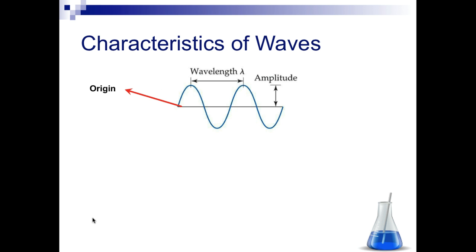So, characteristics of a wave. We have the origin in the middle, then we have the wavelength. The wavelength is the distance that it travels from crest to crest, or trough to trough, and the amplitude is the height of the wave.